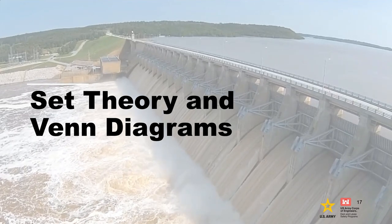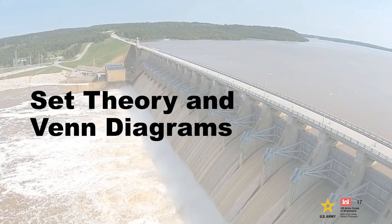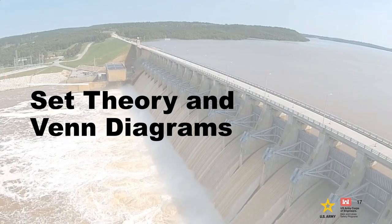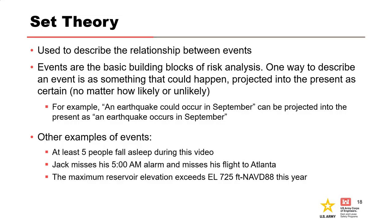Before getting into risk assessments and event trees, it is helpful to consider set theory and Venn diagrams. These diagrams illustrate the probability of and the relationship between events, and can be very helpful when thinking through how potential failure modes are related. Set theory describes relationships between events, and probability theory introduces the concept of size to the sample space. One way to describe an event is something that could happen projected into the present as certain, no matter how likely or unlikely it may be. This is very important when building event trees, because events in a tree are conditional on the occurrence of prior events.